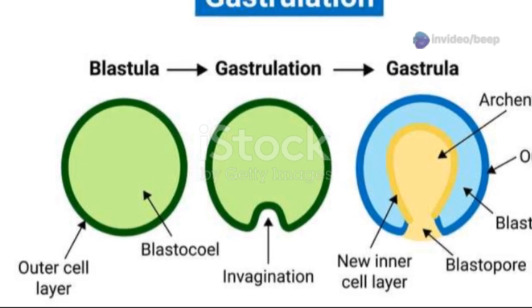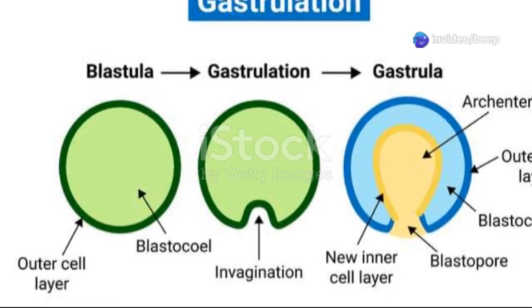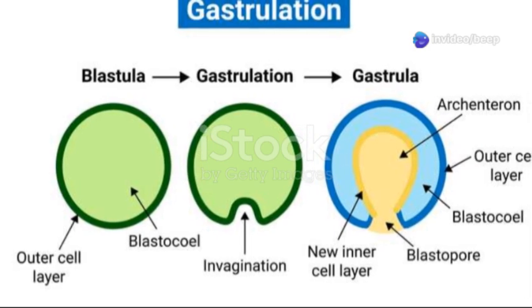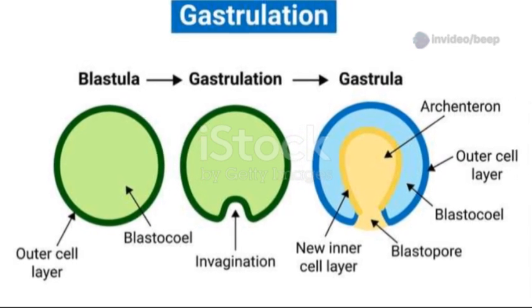Once implanted, the blastocyst continues to grow and develop. The inner cell mass forms two distinct layers — the epiblast and the hypoblast — setting the stage for the next major milestone: gastrulation.